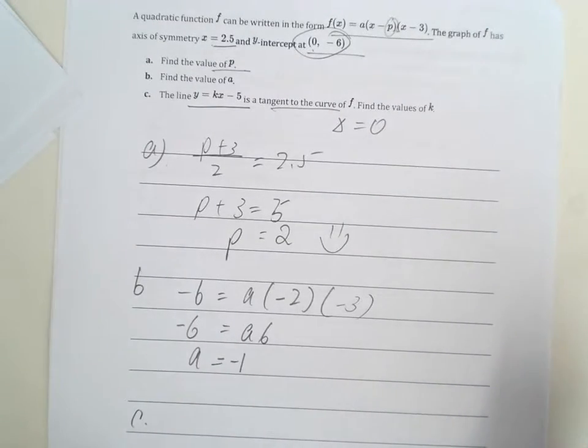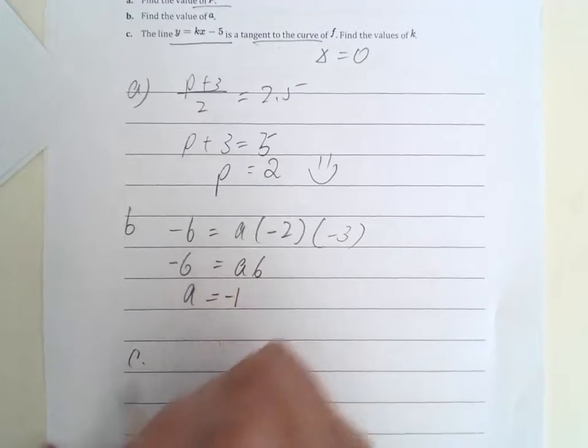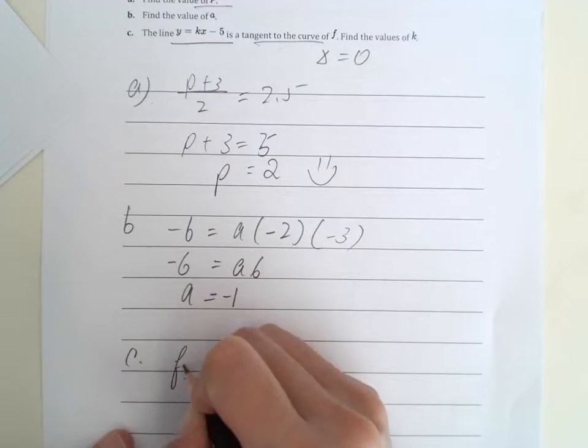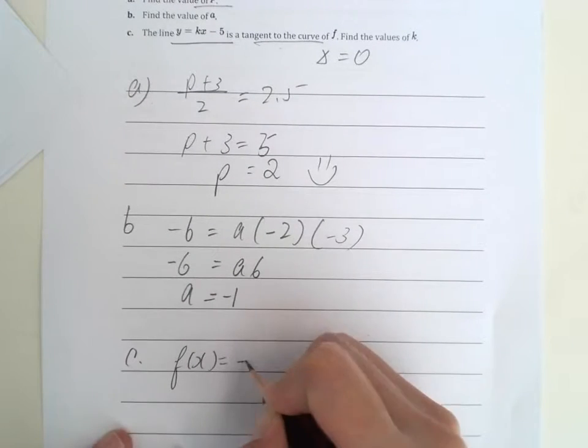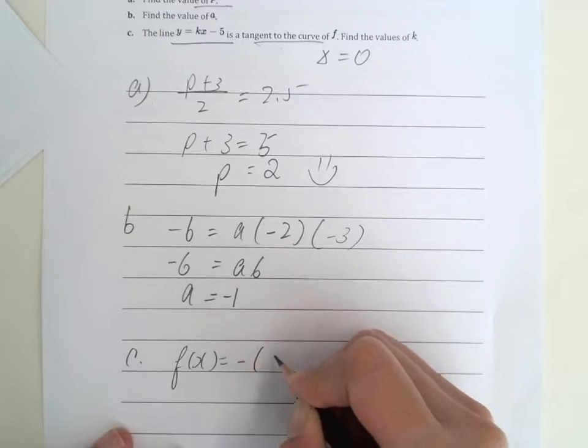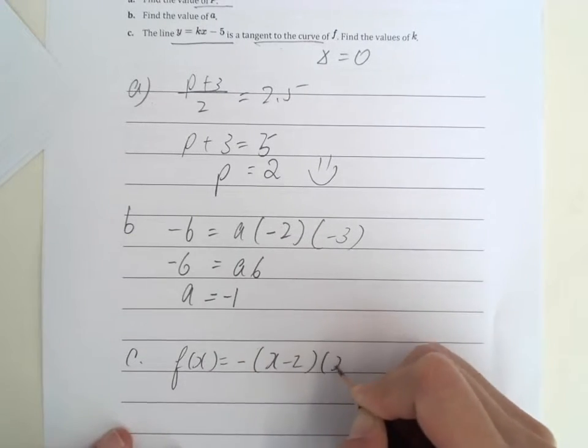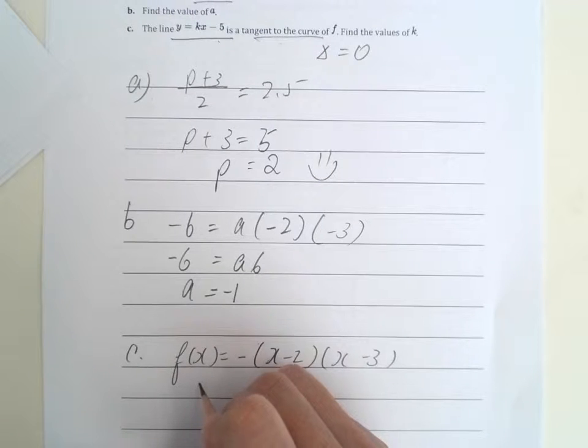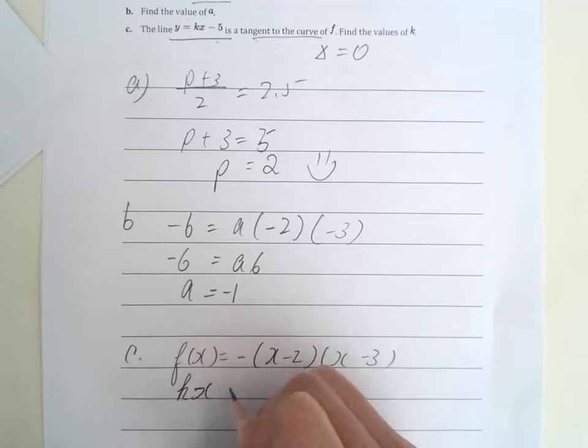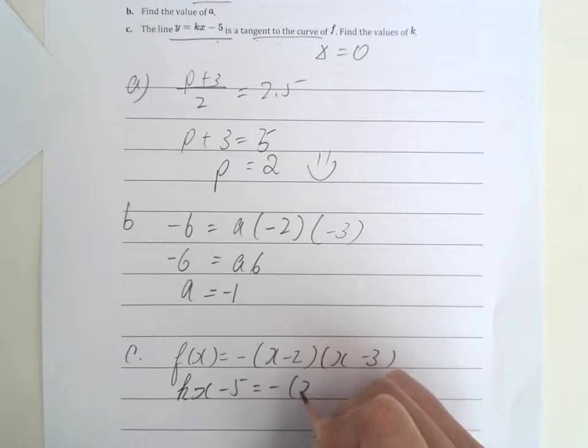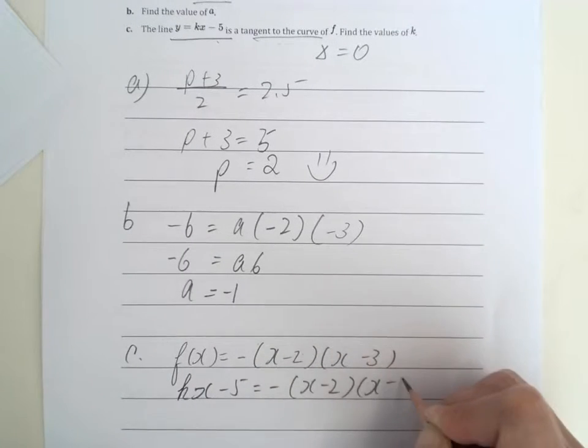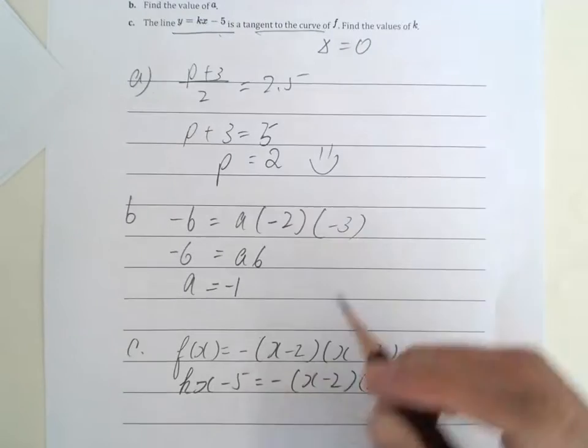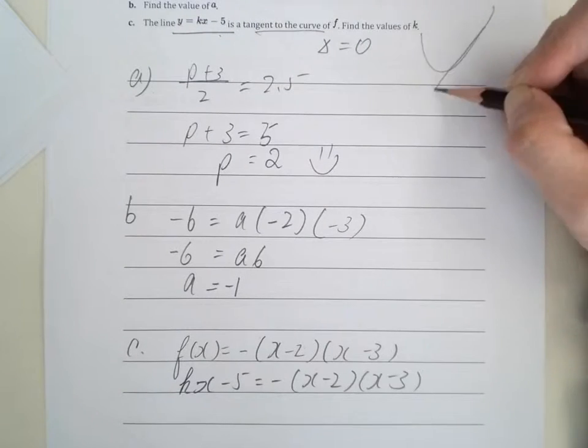So what we can do is that we need to find the x and y point too. And so first of all, f(x) is equal to, rewrite it from the question, negative x minus 2 and x minus 3. And then we have another equation here. So g(x), the next one equals to the other one. So we have Kx minus 5 equals to negative x minus 2, x minus 3. One of the reasons of that is because we need to find their intersecting point.